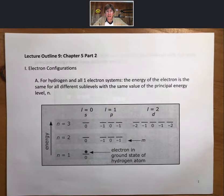This is Lecture Outline 9, which is Chapter 5, Part 2. We're going to now talk about electron configurations, now that we know what orbitals look like. And we're going to start with hydrogen and one-electron systems.